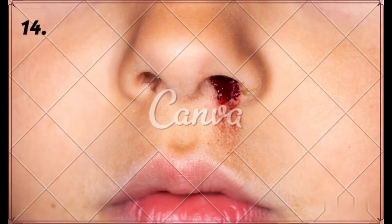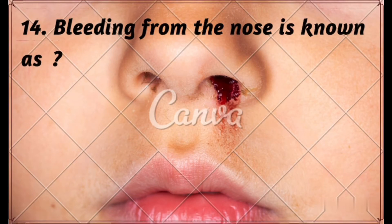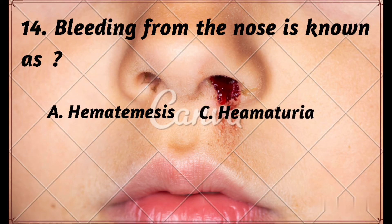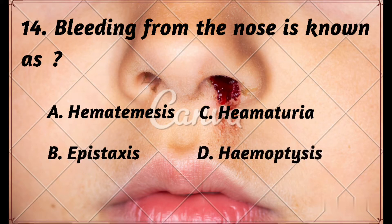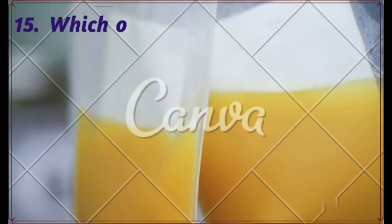Question number 14: Bleeding from the nose is known as — Option A: hematemesis, Option B: epistaxis, Option C: hematuria, Option D: hemoptysis. The right answer is Option B: epistaxis.